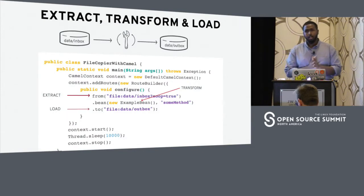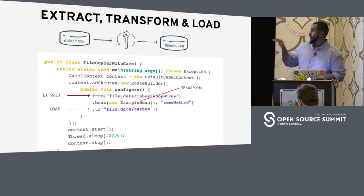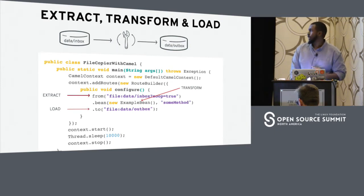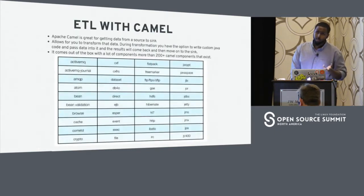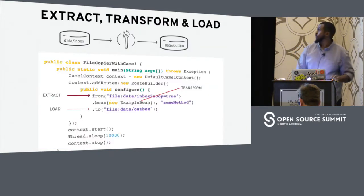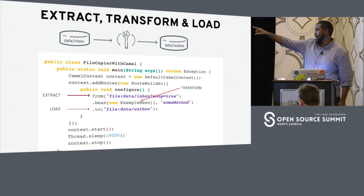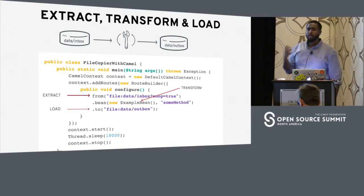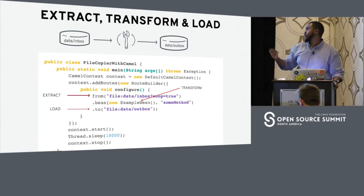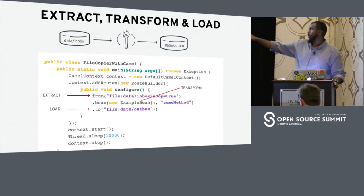What does code like that look like? With Camel, you can write code in Java. You can get data from some location — here we're using a file component, but that can easily be replaced with, for example, the Kafka component or MongoDB. You just replace 'file' with that component. The 'from' statement is very declarative. You don't have to worry about making sure this code connects to MongoDB or all these other systems — that's already done for you.